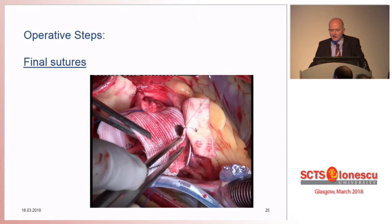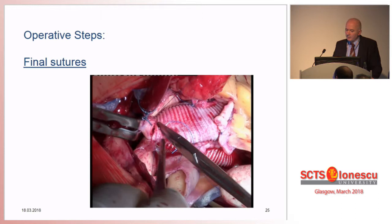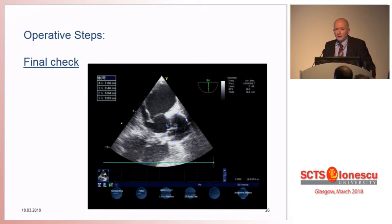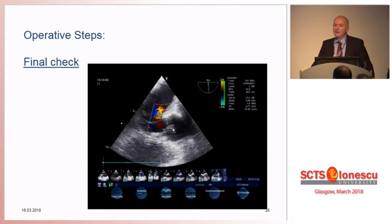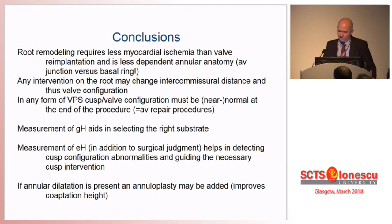Then come the final sutures. You can see here the big buttons are nice to have — I take double bites on the coronary buttons, and in the last 1,500 root replacements I've not had to use felt or pericardial strip or anything else. But still the operation is not finished. The surgeon should not only listen to someone describing a TEE result — he should familiarize himself with this technique and make sure the final check looks like this.